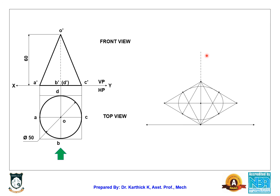To draw the generator, draw a line from the apex to the base ellipse. Since this portion is not visible when looking from this direction, only the outer visible portion needs to be darkened. The hidden part does not need to be darkened.